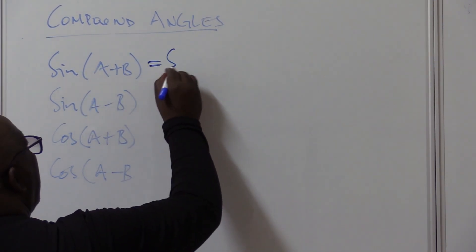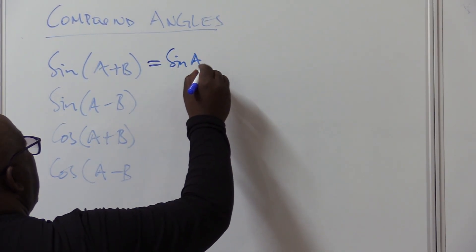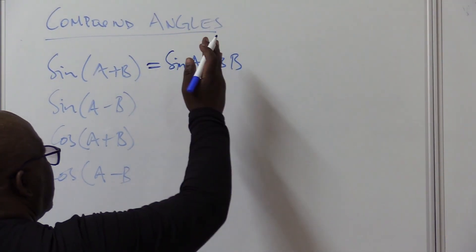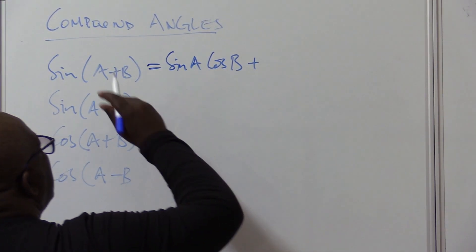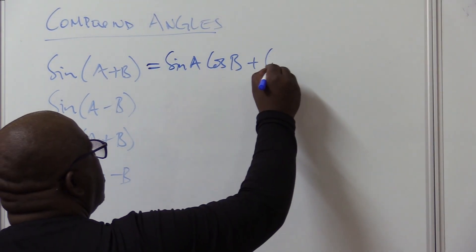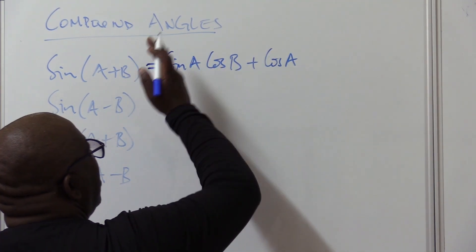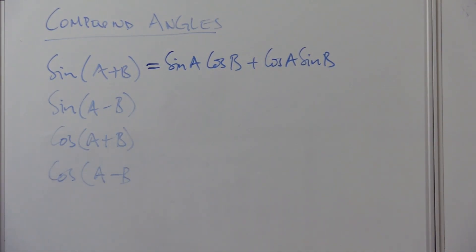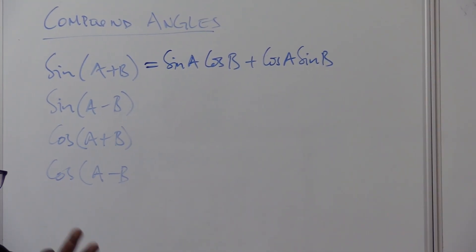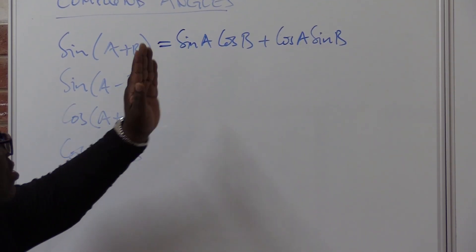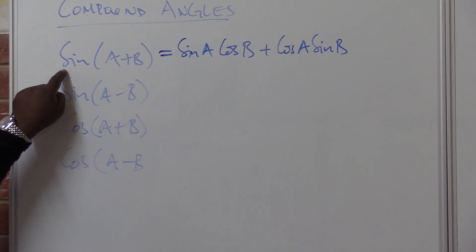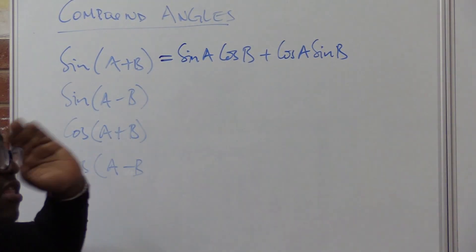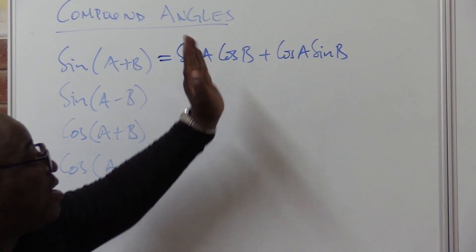Let's write it. The answer will be sine of the first one — sine A, cos B — keep the same sign, which is plus — cos A, sine B. This is how you respond to it. Remember the rhythm: sine cos, same sign, cos sine. You keep the same sign when it's sine. The rhythm is sine cos, same sign, cos sine.